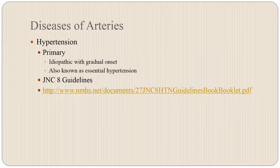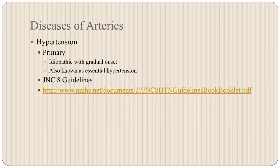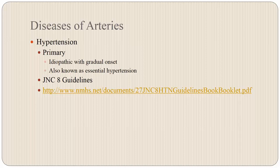When talking about hypertension, we have to distinguish between primary or essential and non-essential hypertension. Primary hypertension has no certain known cause — it is idiopathic with gradual onset, also called essential hypertension. The JNC guidelines are important to know; they are published and available online. Essentially, you need to know the parameters of hypertension evaluation as well as treatment.